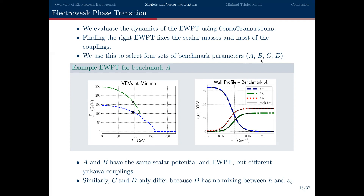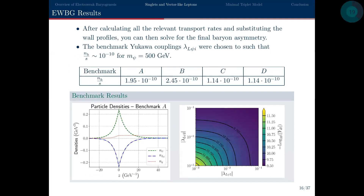Benchmarks A and B have the same scalar potential parameters but different Yukawa couplings, resulting in different collider phenomenology. Benchmarks C and D have a similar scalar potential, except in benchmark C the singlet scalars can mix with the standard model Higgs, while benchmark D has no mixing due to a Z2 symmetry. After evaluating all relevant VEV insertion diagrams, deriving transport rates, plugging them into the differential equations and solving them, you can get the final baryon asymmetry.